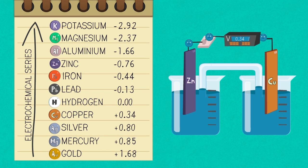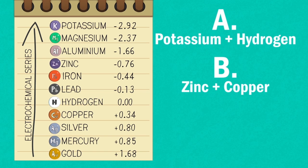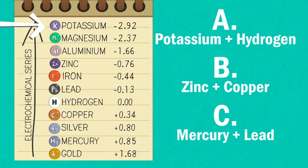Using the electrochemical series, can you predict the direction that the electrons will travel towards for the following pairs of metals? The electrons always move from the metal with the more negative electrode potential to the more positive electrode potential. Pause the video and continue when ready.